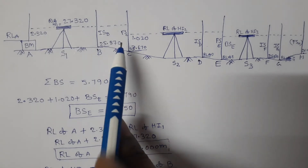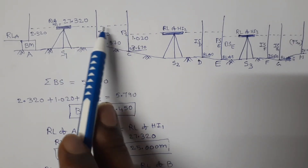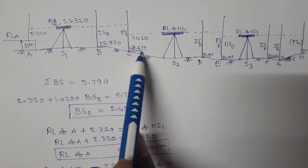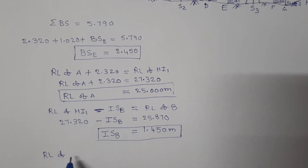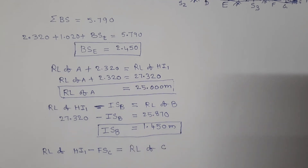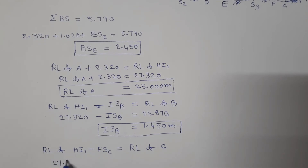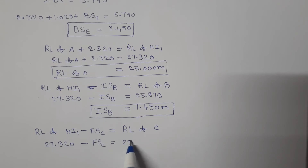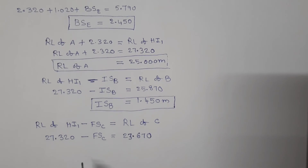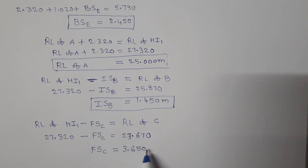RL of height of instrument 1 minus foresight on C is equal to RL of C. So 27.320 minus FSC is equal to 23.670. Therefore, foresight on C is equal to 3.650 meters.